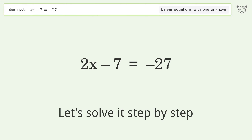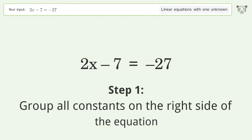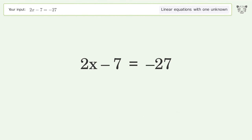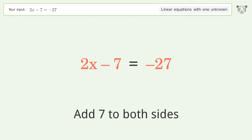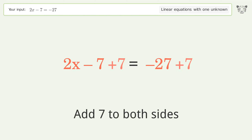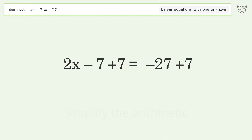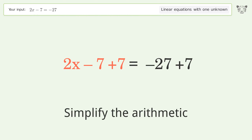Let's solve it step by step. Group all constants on the right side of the equation — add 7 to both sides, then simplify the arithmetic.